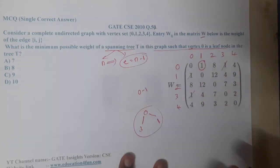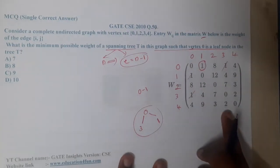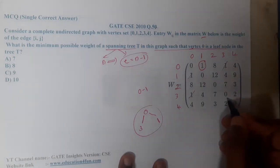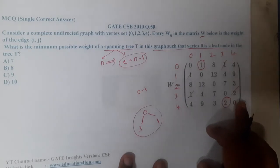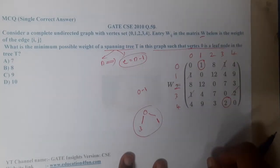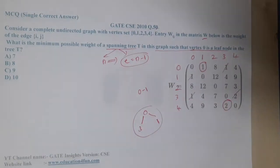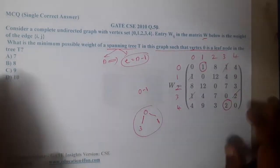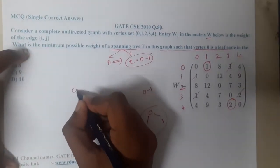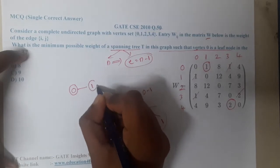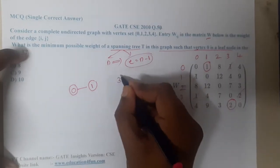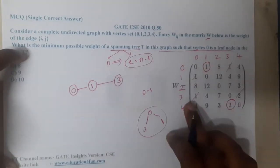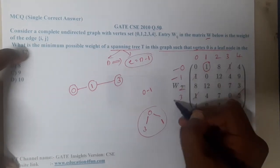The next global minimum after 0–1 is the edge 4 comma 3. Since this is a mirror matrix, I mark both sides to reduce confusion. Now let us start drawing the tree. First I safeguard vertex 0 as a leaf — connected only through the edge 0–1. From vertex 1, the minimum outgoing edge goes to vertex 3 directly.